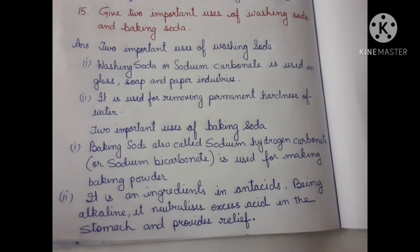Question 15: Give two important uses of washing soda and baking soda. Washing soda (sodium carbonate): 1 — used in glass, soap, and paper industries; 2 — used for removing permanent hardness of water. Baking soda (sodium hydrogen carbonate/sodium bicarbonate): 1 — used for making baking powder; 2 — being alkaline, it neutralizes excess acid in the stomach and provides relief.